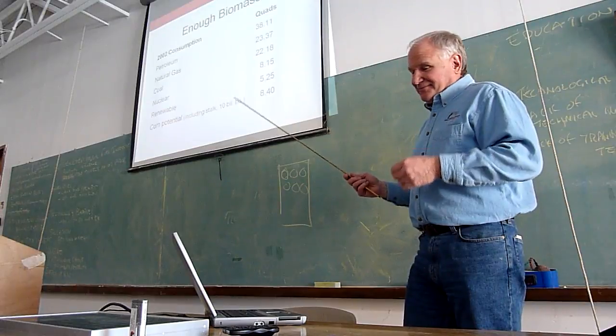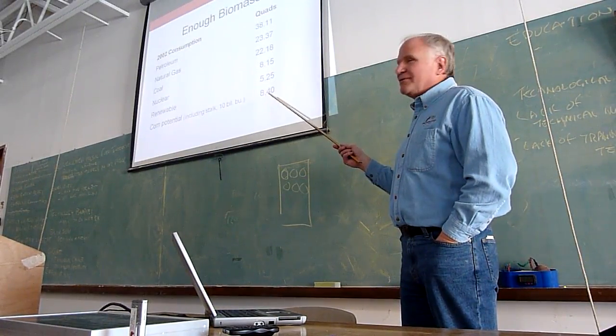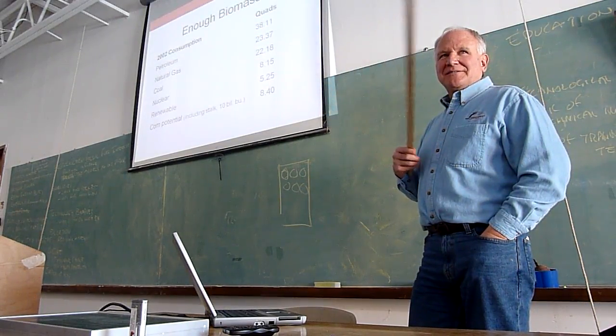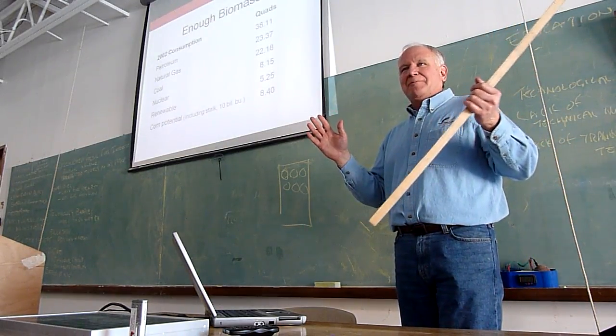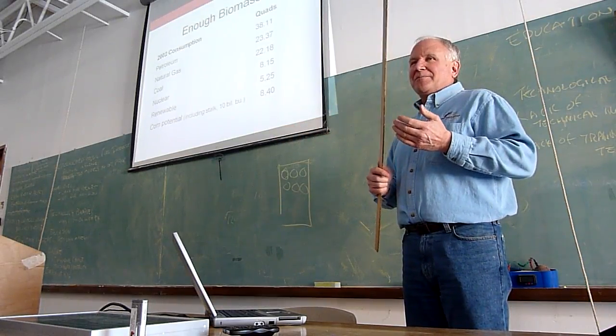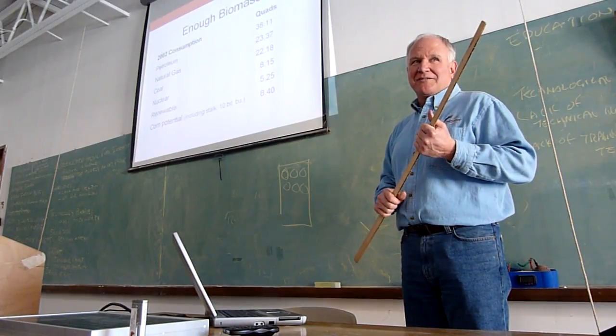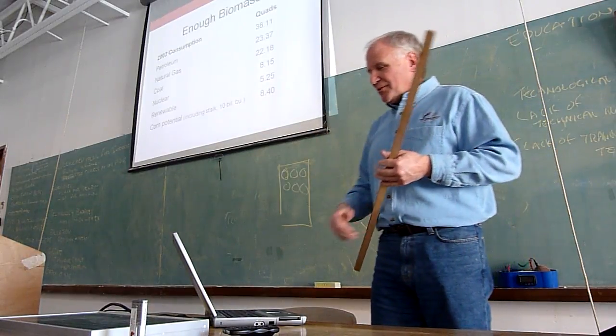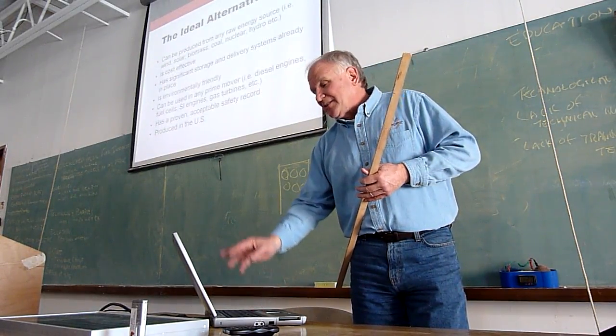Enough biomass. If you took the whole corn crop in the United States and converted it to 100% energy, you wouldn't produce 10% of the energy we use in the United States. You just can't get there. And corn grows better than hybrid poplars in terms of tons per acre year after year. You can't hardly beat it. Sorghum does better. Some grasses, they say, can do better, but that's, you know, on a little test plot. It's tough to beat the growing potential of corn for converting sunlight into plant material in this neck of the world.